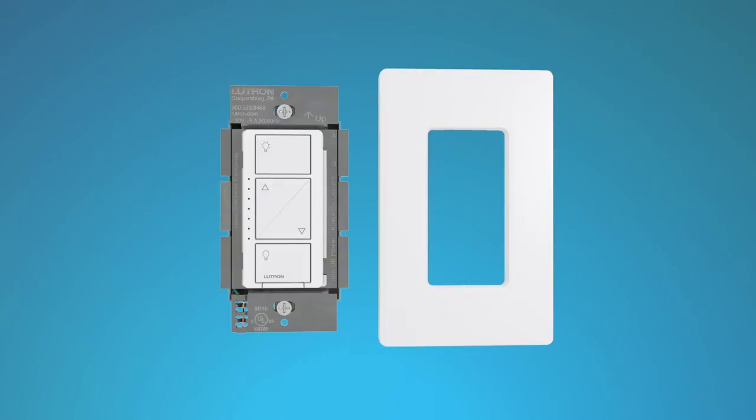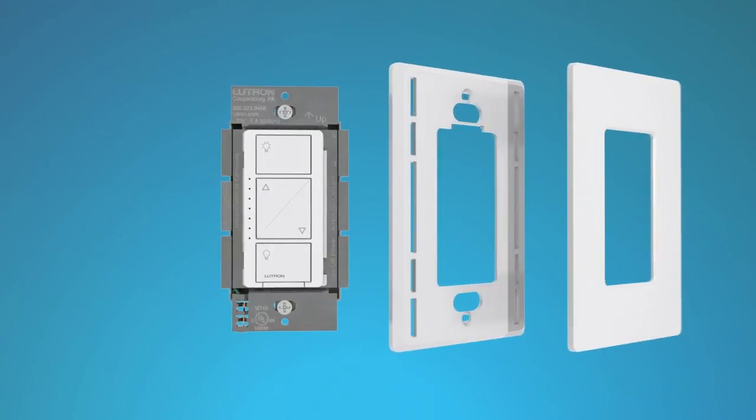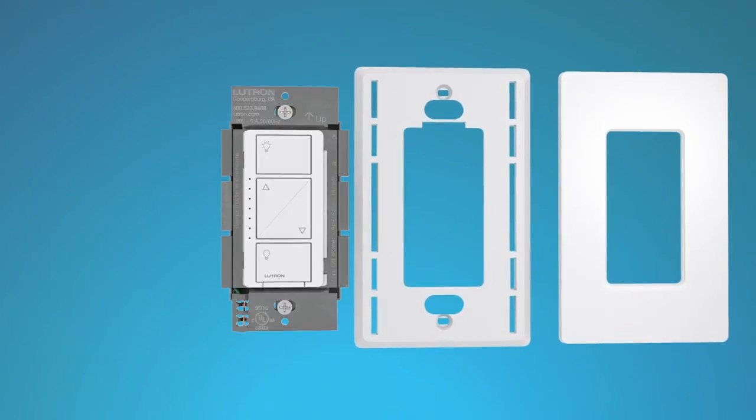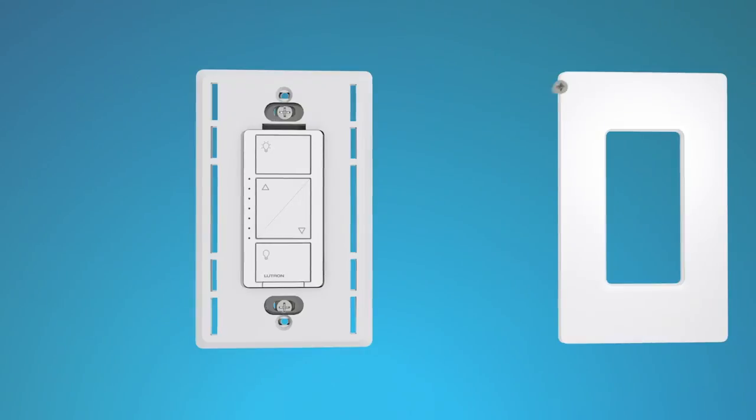If you're using a Claro screwless wall plate, first separate the front panel of the wall plate from its adapter. Place the Claro wall plate adapter over the Caseta Wireless Dimmer and fasten the adapter to the dimmer by tightening the screws included with the Claro wall plate. Then snap the front of the wall plate into place.